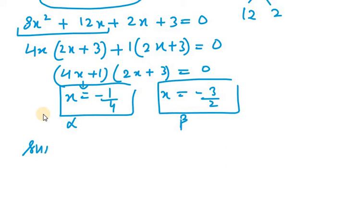Now, we need to verify the answer. For that, we will be finding sum of zeros. Alpha plus beta equals minus 1 over 4 minus 3 over 2. Taking LCM,